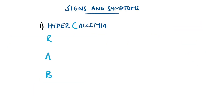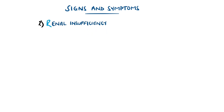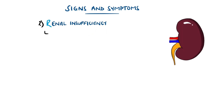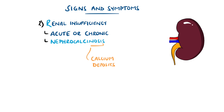R is for renal insufficiency, which can occur acutely or it can be chronic. The increased calcium levels can lead to nephrocalcinosis, meaning calcium being deposited within the kidney, causing dysfunction, and can also lead to renal stones.